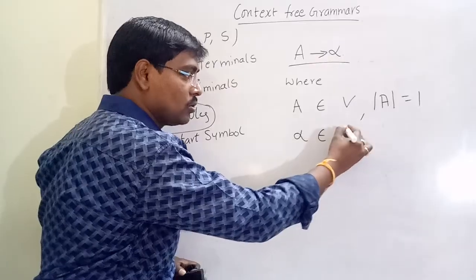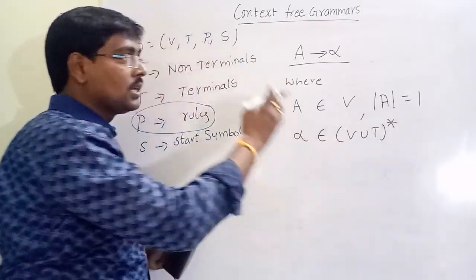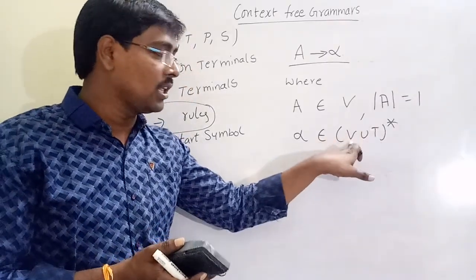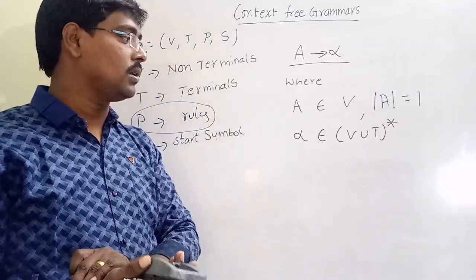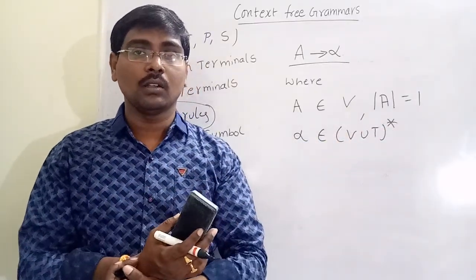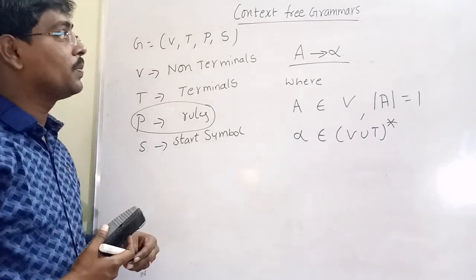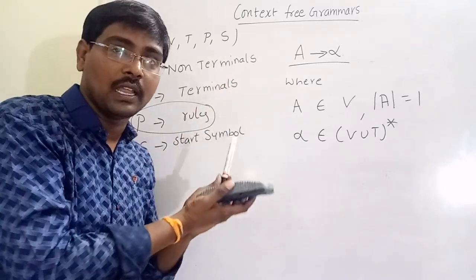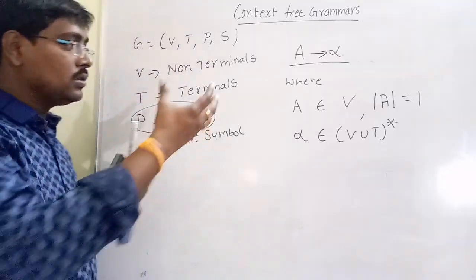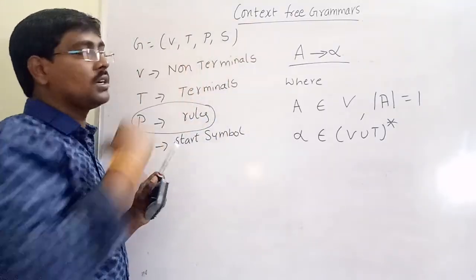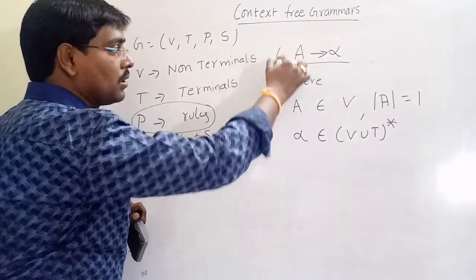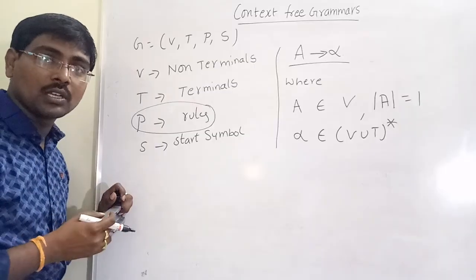And alpha belongs to (V union T)*, meaning the right-hand side is any combination of terminals and non-terminals. The length is not a matter, and including epsilon also. These context-free grammars generate context-free languages, which are used for writing programming languages. This is the important rule for constructing a context-free grammar.